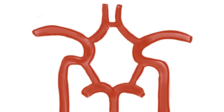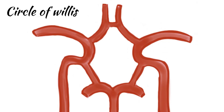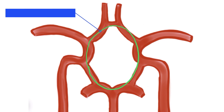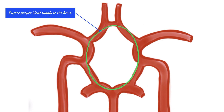Hello everyone. In this video we will learn about the Circle of Willis — which arteries are involved in its formation and what is the clinical significance of it. The Circle of Willis is a circular network of blood vessels at the base of the brain that ensures proper blood supply to the brain.